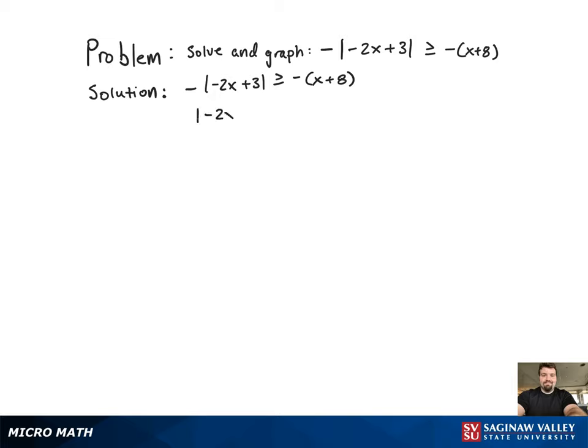The first step in this absolute value inequality problem is solving for the absolute value on the left hand side. So we're going to divide both sides by negative 1. Don't forget to flip the inequality symbol.